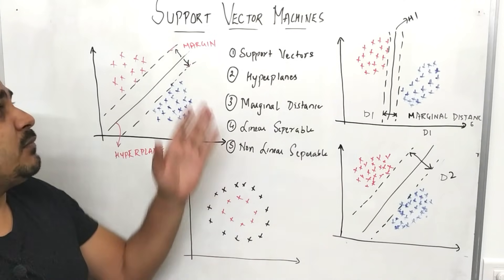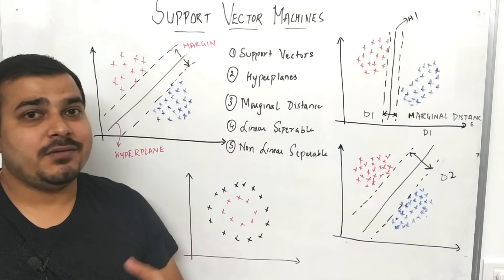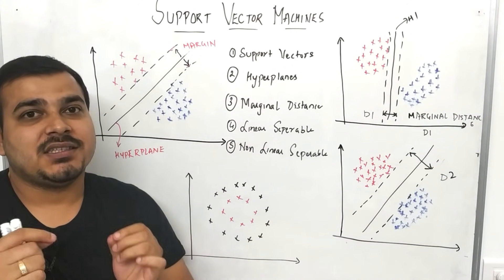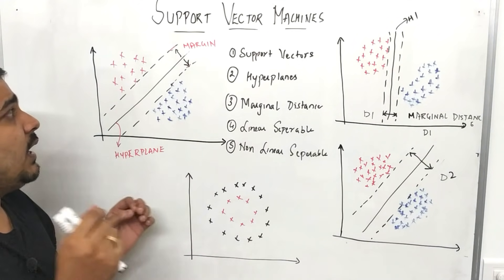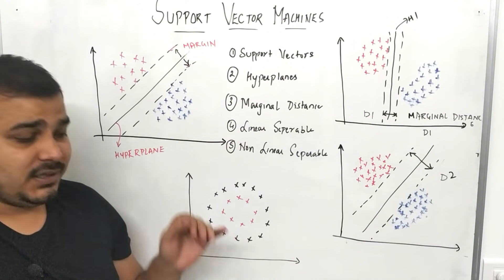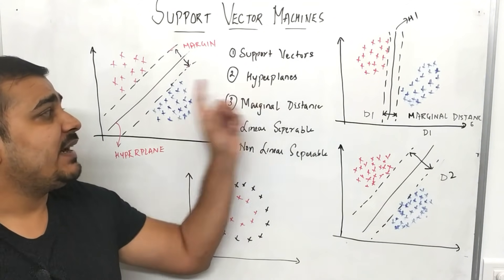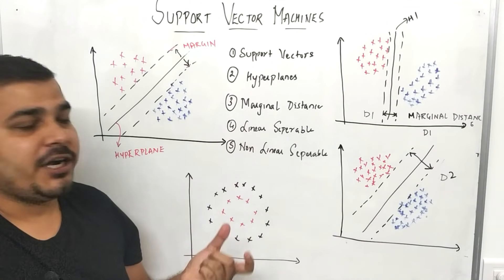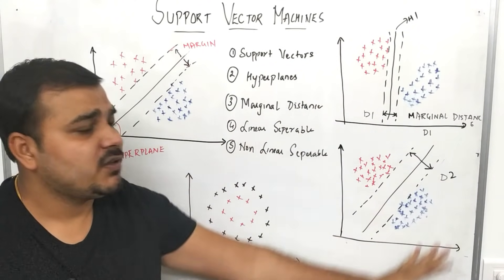First of all, we need to understand what kind of problem statement Support Vector Machine actually solves. With respect to supervised machine learning, it is useful in solving both classification and regression problem statements. In this part, we are going to understand what support vectors are, what a hyperplane is, what marginal distance is, and what linear separable and non-linear separable points are.